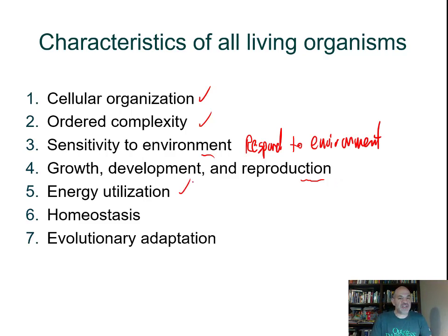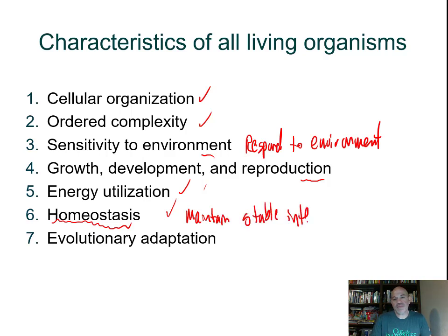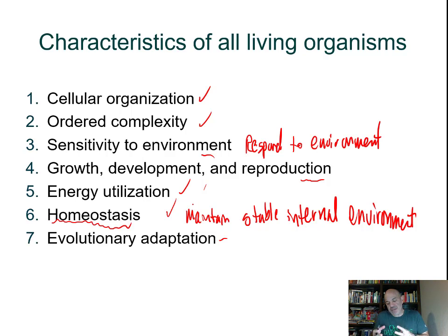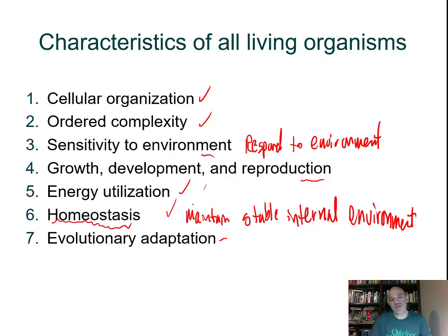Living things utilize energy to maintain order; otherwise molecules tend to break apart into disorder. Living things also maintain a stable internal environment — that is the definition of homeostasis. Additionally, living things evolve. The individual organism does not evolve, but within a population of the same species, there is genetic variation. Over long periods of time, changes occur based on that variation, and populations adapt as the environment changes.